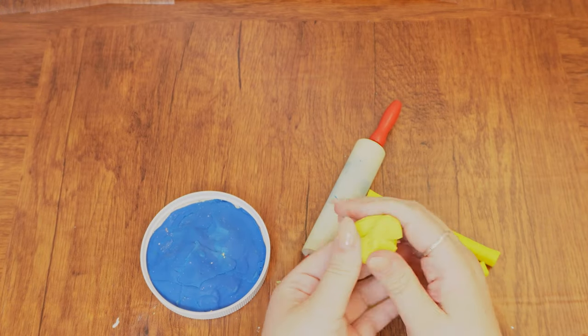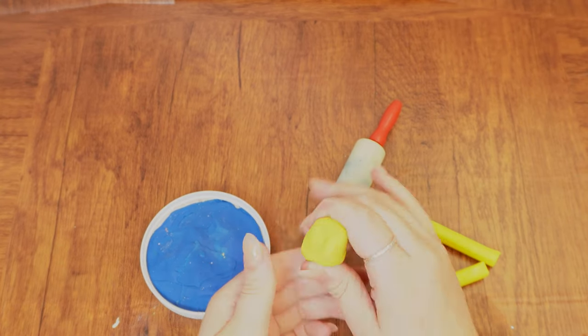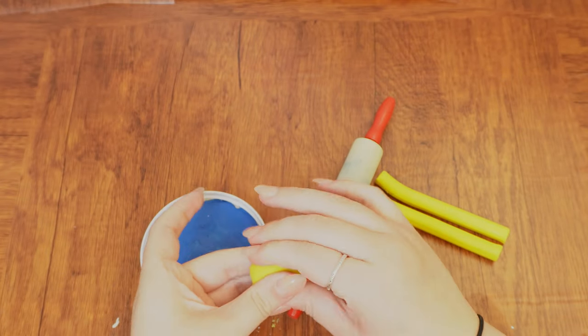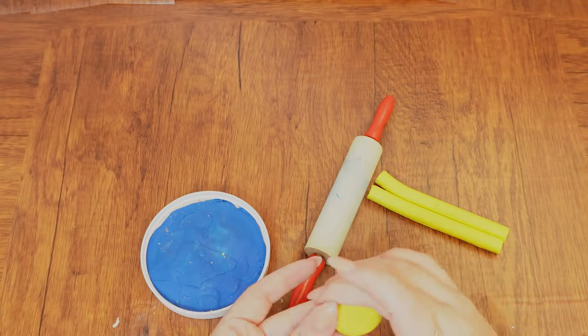Form two balls of yellow clay. Mold one of them into an oval and the other into a triangle. Do you know what we are trying to create with these shapes? If you guessed a fish, you're right.